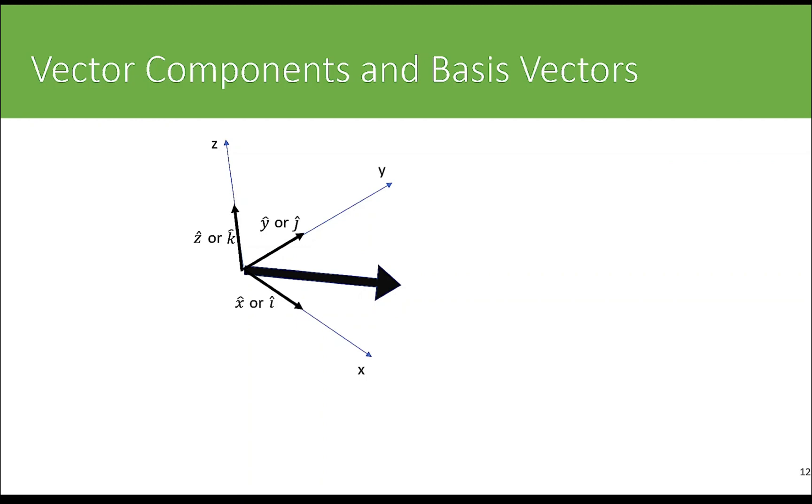The direction of the basis vector or unit vectors is in the direction of the coordinate axis. So this might represent the unit vector in the x direction, often called x-hat or sometimes i-hat. Likewise, y-hat, sometimes called j-hat, points in the direction of increasing y-axis, and the z-hat or k-hat unit vector points in the direction of increasing z.